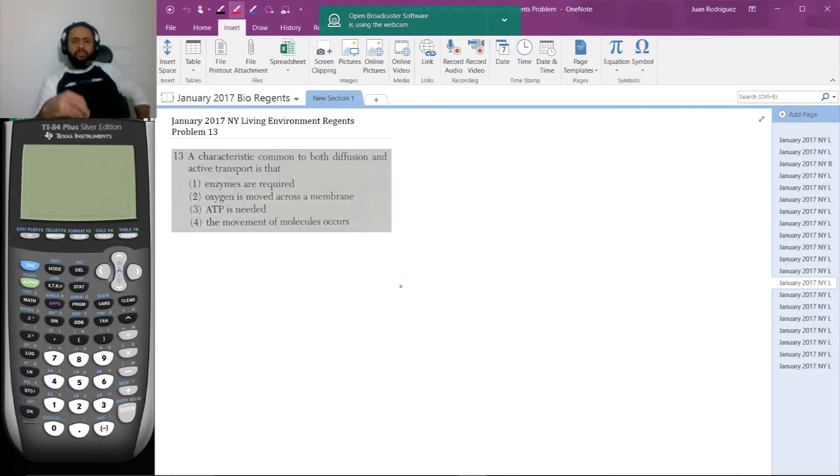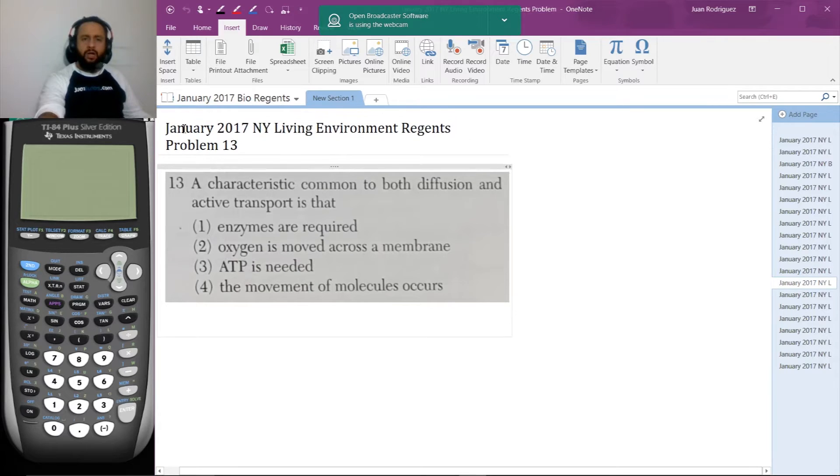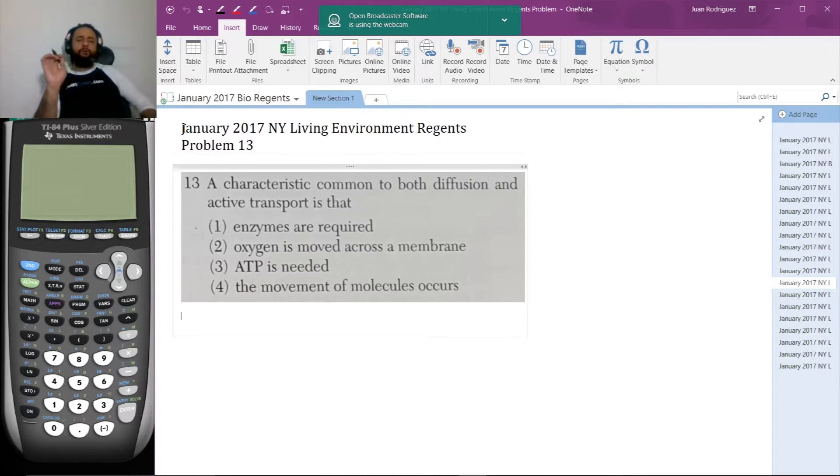Here's number 13. A characteristic common to both diffusion and active transport is that: one, enzymes are required; two, oxygen is moved across the membrane; three, ATP is needed; or four, the movement of molecules occurs. So try to guess this answer. See if you get the same answer as we do. Hit the like button if you do. And always answer the question before watching the video.